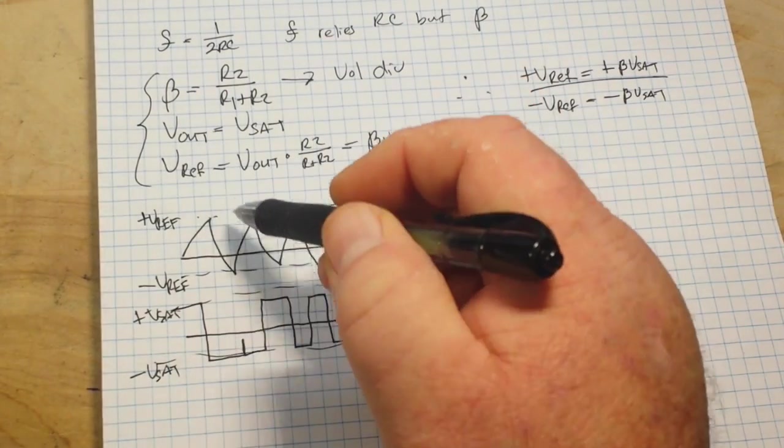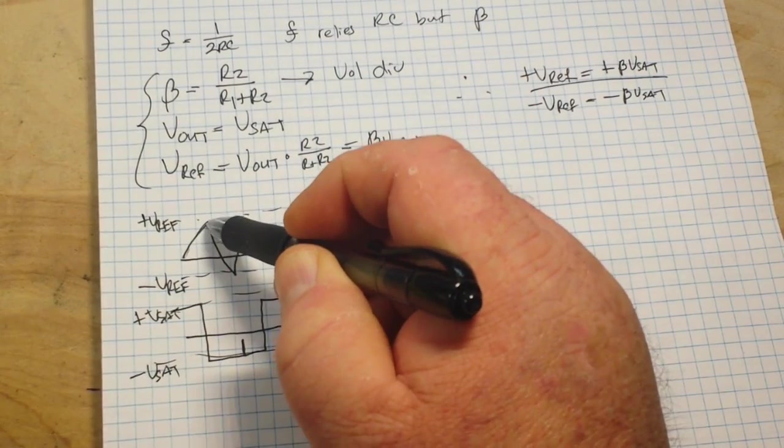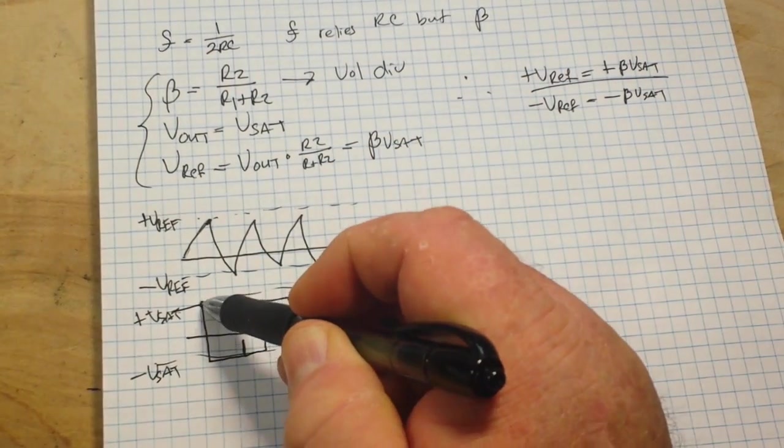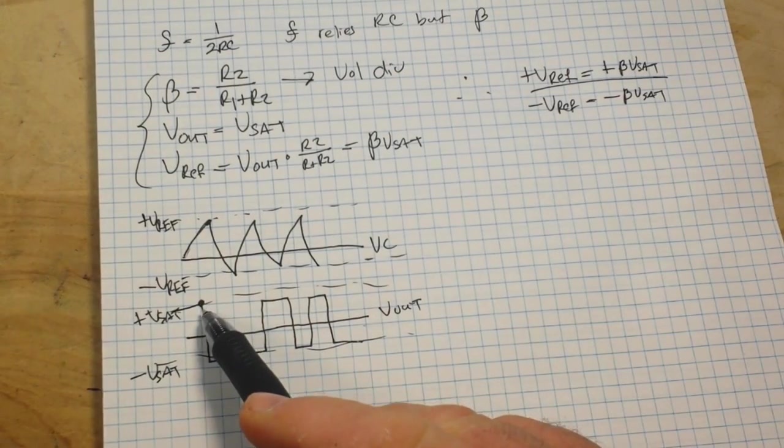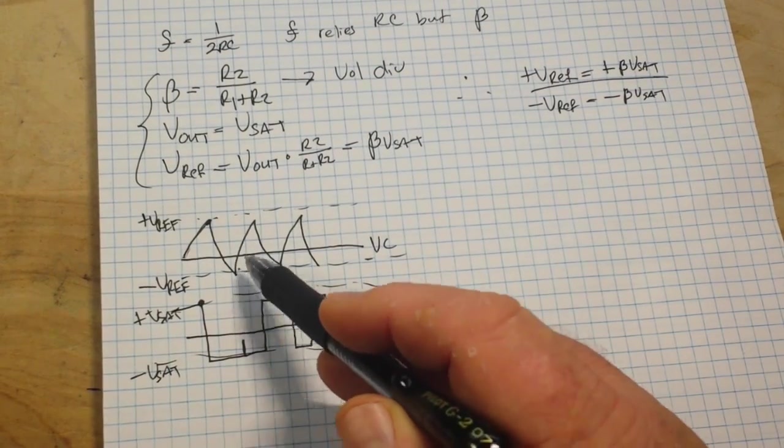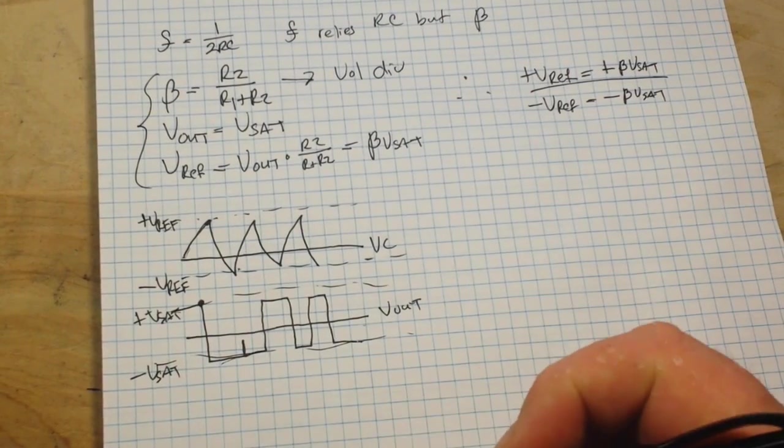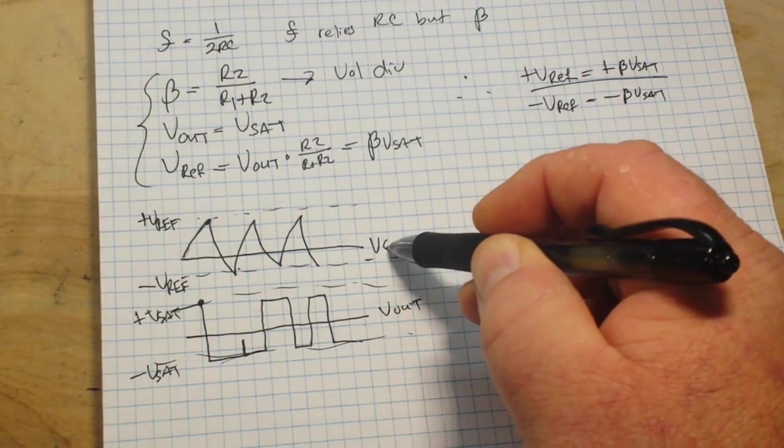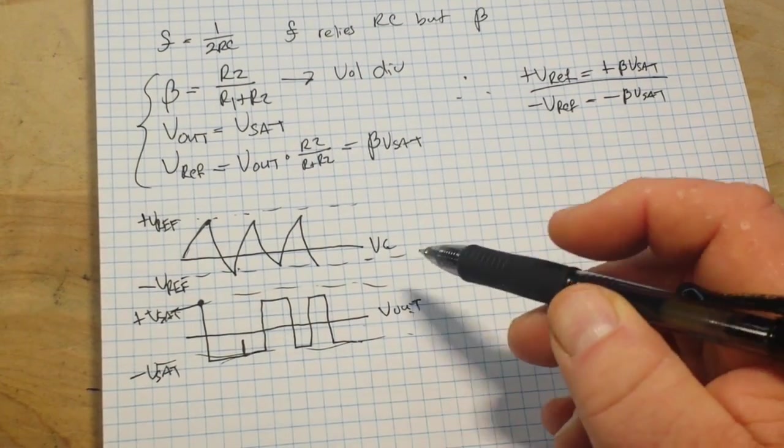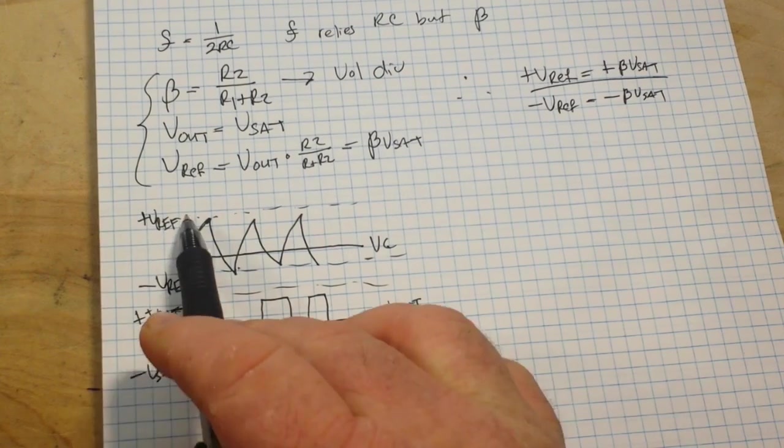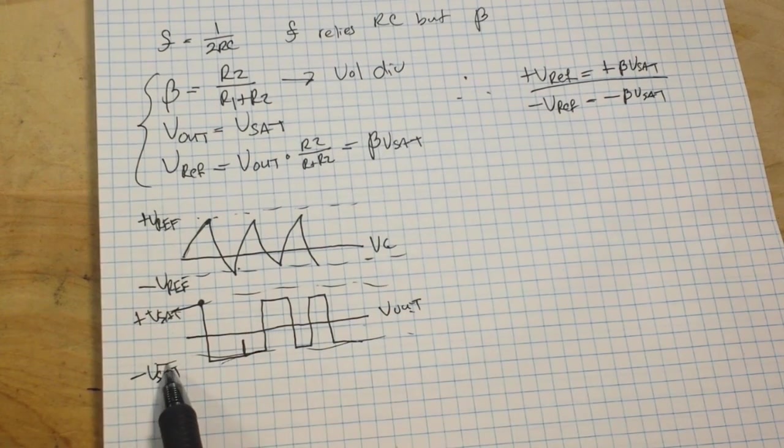So basically all we're saying here is when the capacitor is fully charged, we are at the high point of our square wave. When it is discharged, we are at the low point of our square wave. The capacitor voltage is our Vref values, and our square wave points are our saturation values.